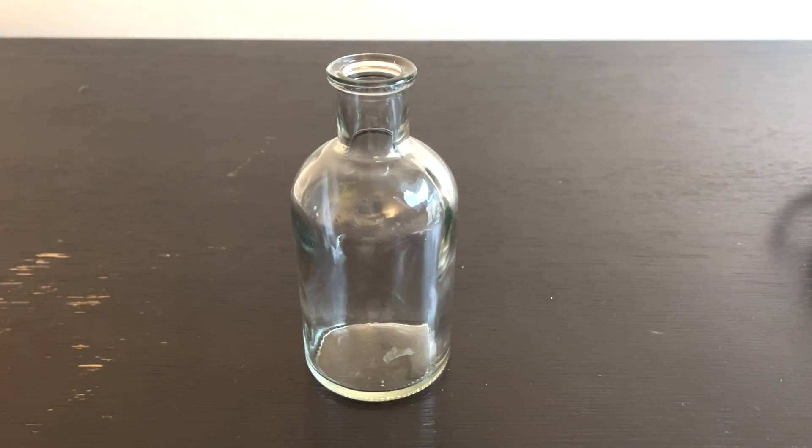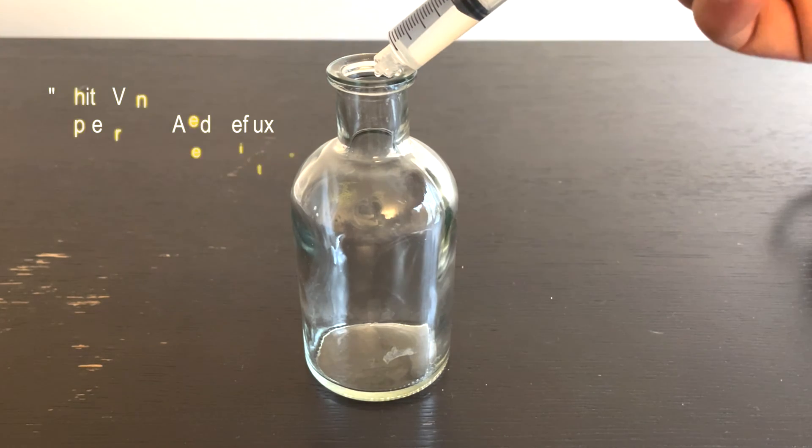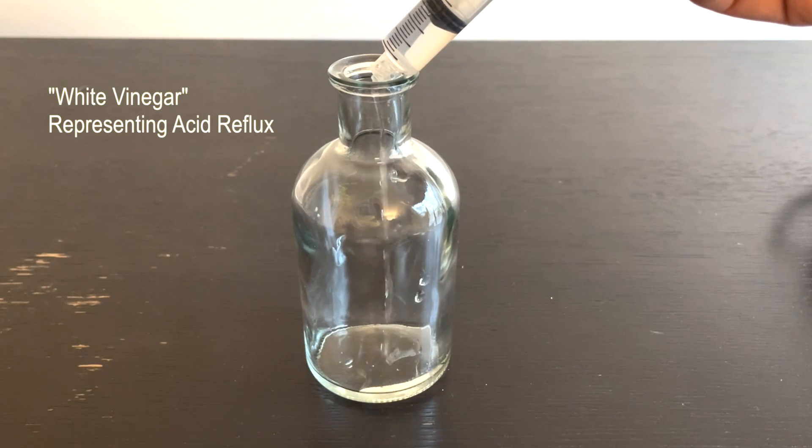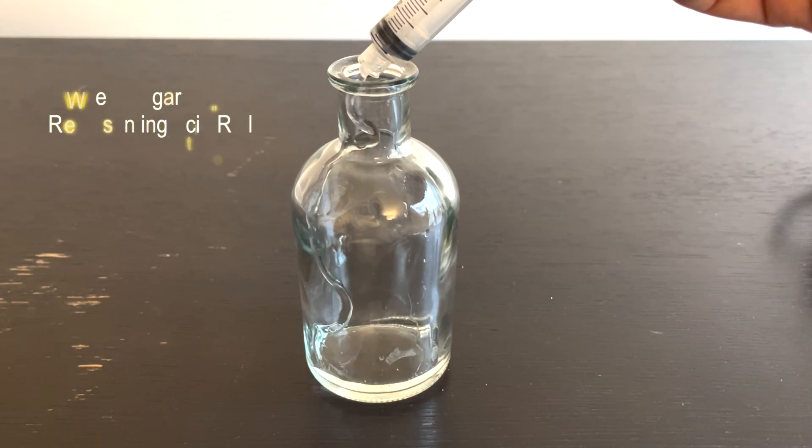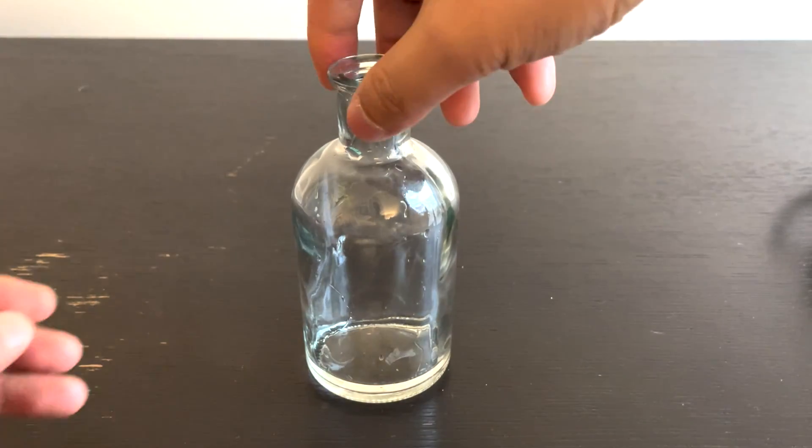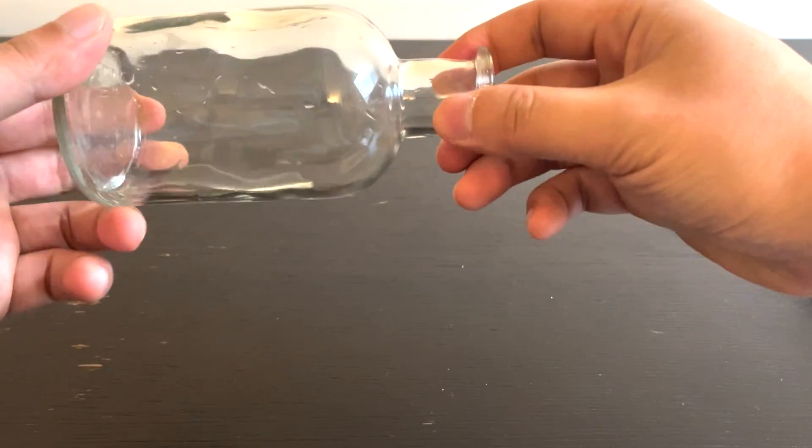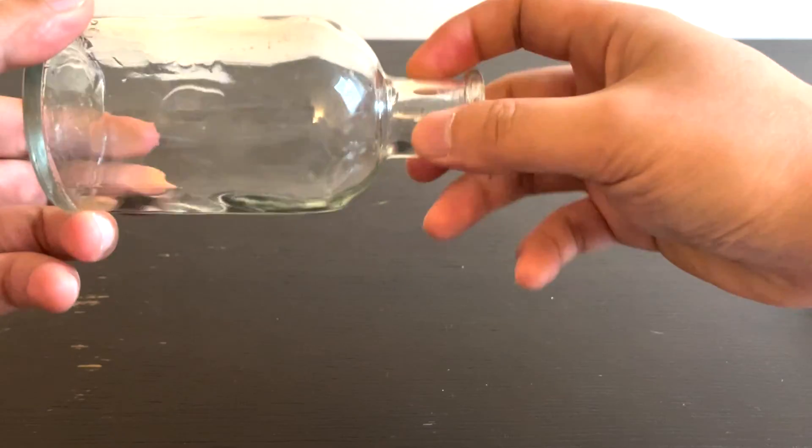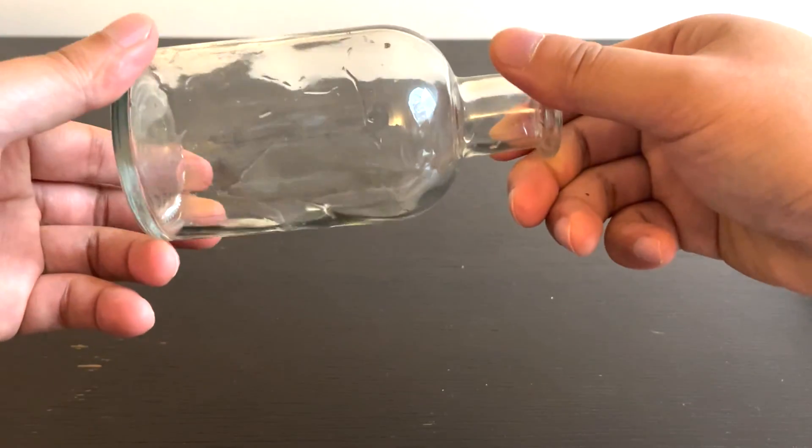Some white vinegar representing acid reflux will be injected into the bottle. I'm going to rotate the bottle around to coat the walls with the white vinegar. Consider this action representing acid reflux events.